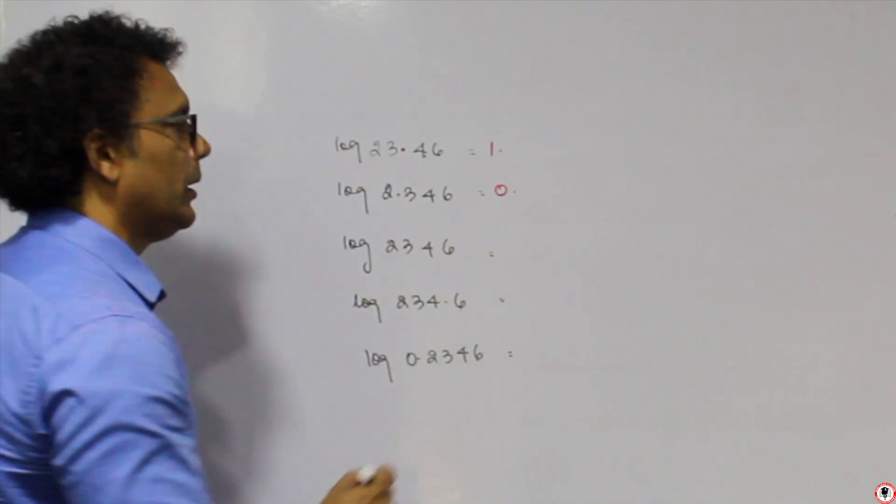For 2.346, the characteristic is 0. The mantissa from 23 in 4 with difference of 6 is the same: 3703. So log of 2.346 = 0.3703. For 2346, the characteristic is 3, and the mantissa is again 3703, so log of 2346 = 3.3703. For 0.2346 with characteristic bar 1, log = 1̄.3703. For 0.02346 with characteristic bar 2, log = 2̄.3703.